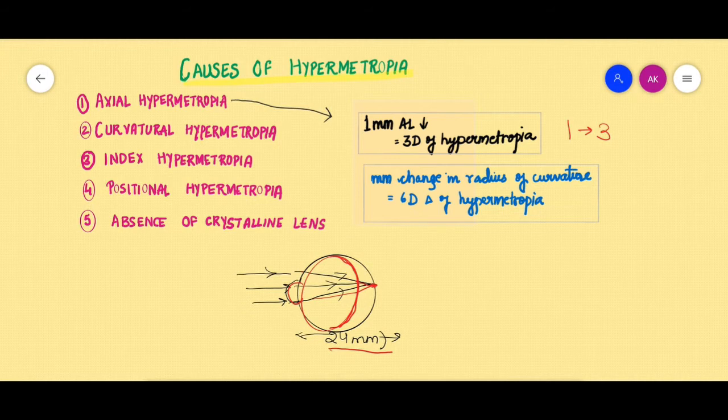So now coming to the second cause of hypermetropia, which is curvature hypermetropia. Curvature is the term that we use for our cornea, and here we are talking about the corneal curvature.